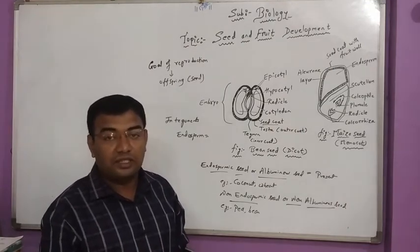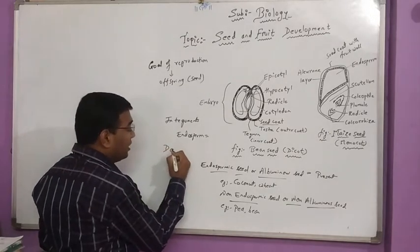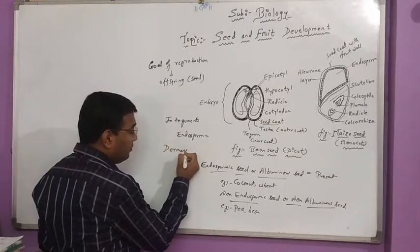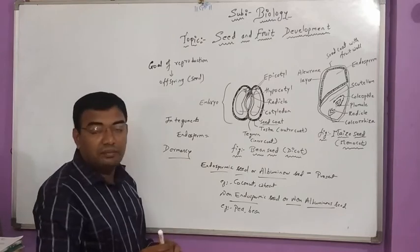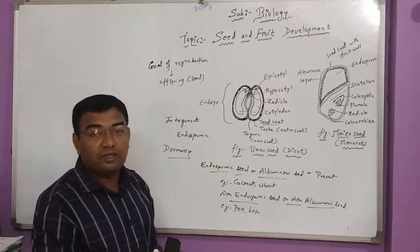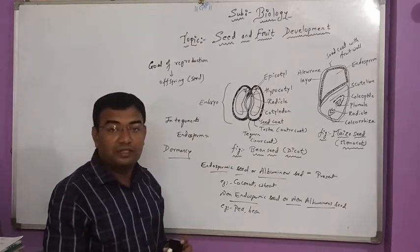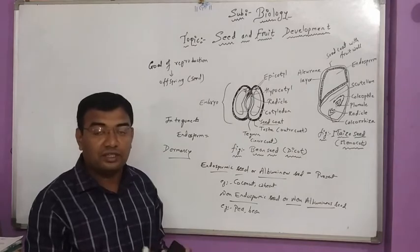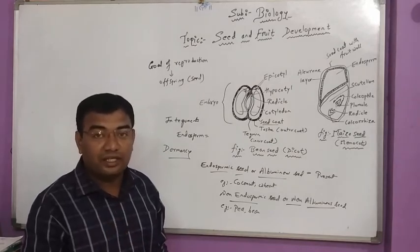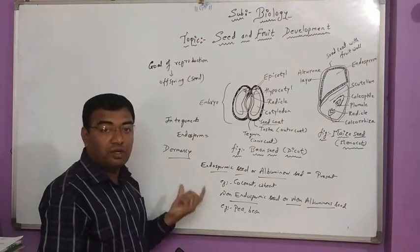Next when we see about the dormancy, dormancy is also a condition in the seed which is correlated to the seed where the seed remains in inactive stage. Why they are called as inactive? Because the metabolic rates get arrested and the seed grows in dormancy. When it gets a favorable condition, the seeds again get germinated and it develops into a new plant. So this concept also you have to remember, dormancy.